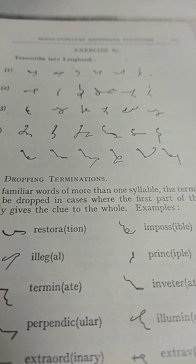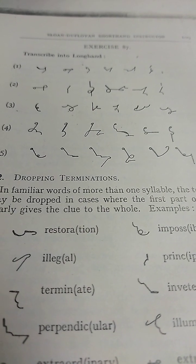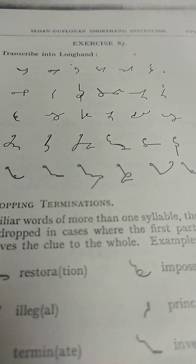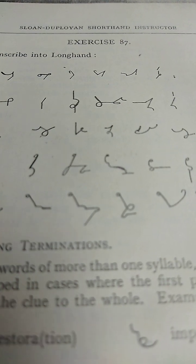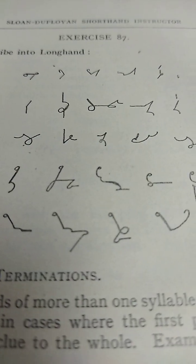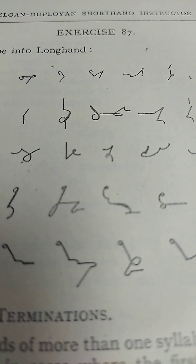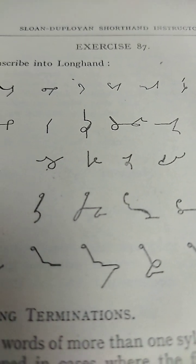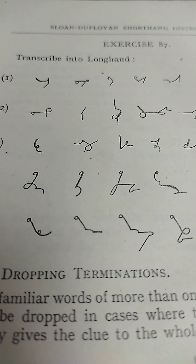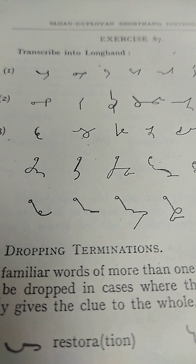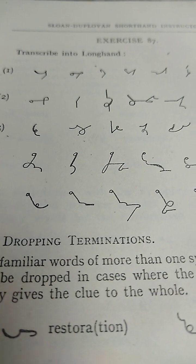Sloan Dupline Shorthand Section 10, Exercise 87. These shorthand outlines are given.